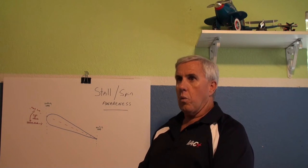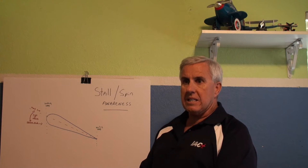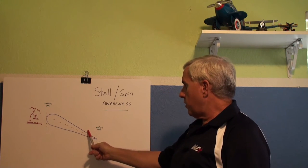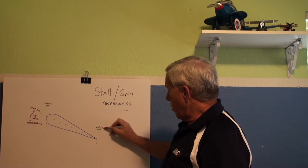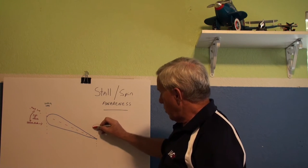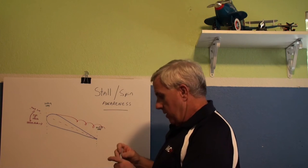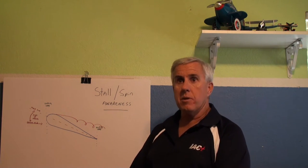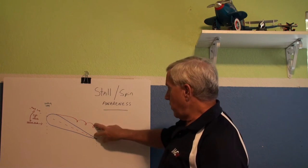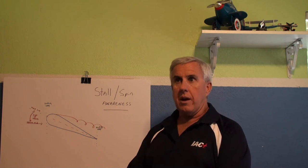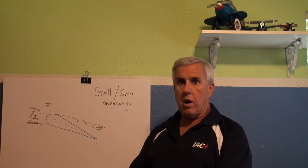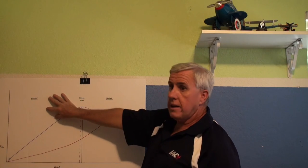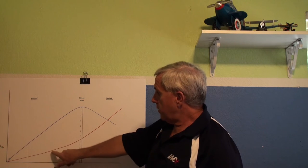When you exceed the critical angle of attack, the air flowing over the upper portion of the wing can no longer smoothly follow the wing's contour. You get airflow separation starting from the trailing edge and working forward to the leading edge. This airflow separation is often called the stall, and it produces induced drag — which is why drag goes up so quickly past the critical angle of attack. Normal flight is characterized by the aircraft generating lift faster than drag.